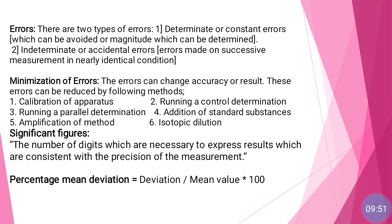Then percentage mean deviation. The mean — the average of all the results — is calculated, and the difference between the average value and each individual result gives the deviation from the mean value. This is then converted into percentage mean deviation. The formula is: percentage mean deviation = (deviation / mean value) × 100.